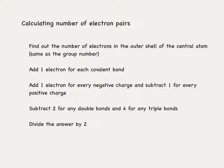We are then going to add one electron for each covalent bond. If it is an ion, add one electron for every negative charge and subtract one for every positive charge. If there are any double bonds, we are going to subtract two from the total number, and if there are any triple bonds, subtract four. Finally, we are going to divide our answer by two.